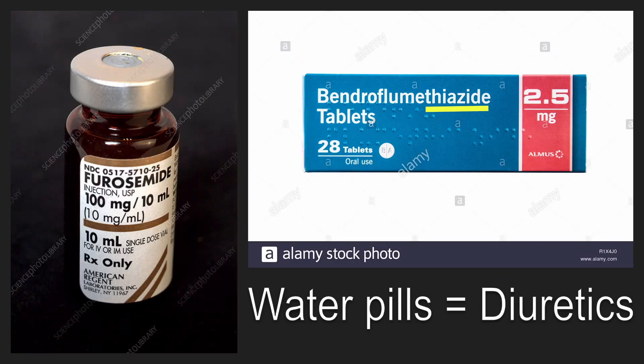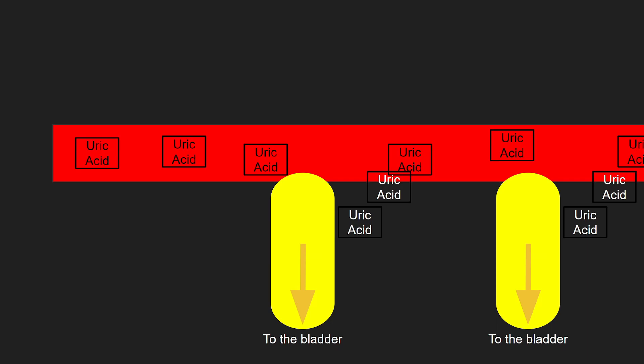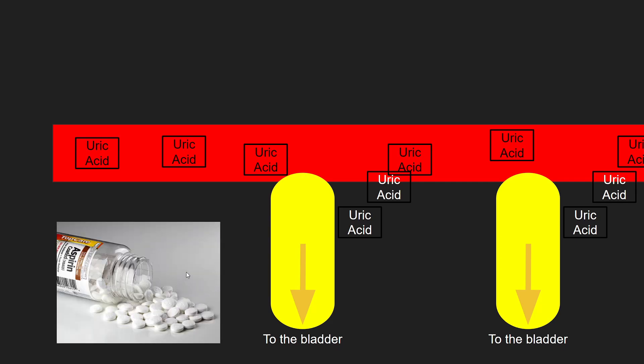As a side effect, some medications can interfere with excretion of uric acid. The most common medications include the water pills like furosemide and the thiazides. The idea is that the medications allow uric acid to return from the kidney back into the blood. A low dose of aspirin can do this as well.